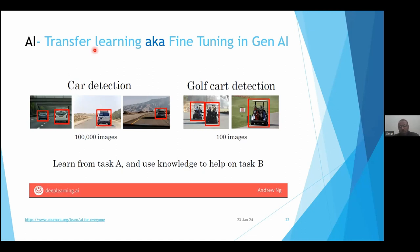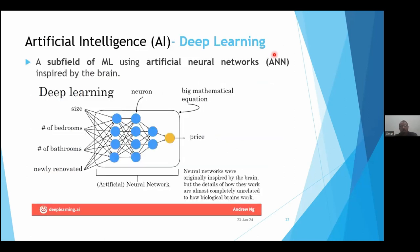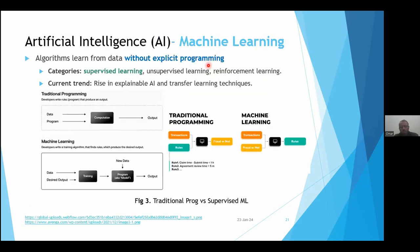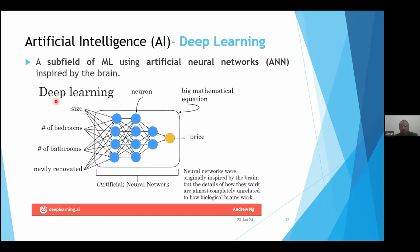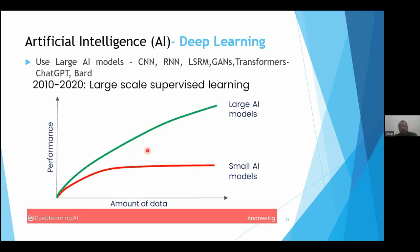Transfer learning in deep learning — deep learning is a subfield of machine learning where we use different types of artificial neural networks — is also called fine-tuning in the generative AI context. I'll share that we can retrain our model like ChatGPT this way. In deep learning, the model learns from input features and provides answers like house price. We compare whether the price is correct and retrain our model accordingly.